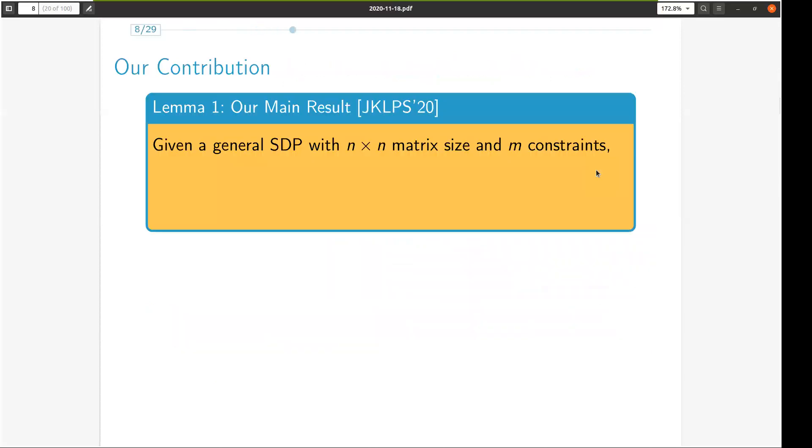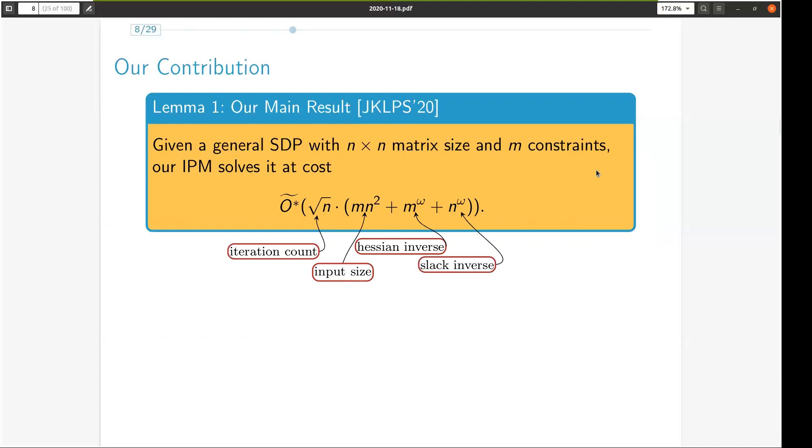Here is our main result. Given a general SDP with m constraints and n by n matrix size, our interior point method solves it at cost square root n times mn square plus m to the omega plus n to the omega. Here square root n is the iteration complexity, mn square is the input size, m to the omega is the cost of inverting the Hessian, which is an m by m matrix, and n to the omega is the cost of inverting the slack, which is an n by n matrix.